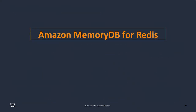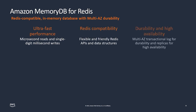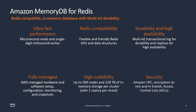Let's talk about how MemoryDB for Redis works. First, it's a Redis-compatible in-memory database with multi-AZ durability. It is intended to be used as a primary data store and provides low latency. It has the flexible and friendly Redis APIs that developers love for building highly concurrent applications. The durability comes from a multi-AZ transaction log, which also has replicas for high availability. We provide a fully managed service that gives you hardware, software setup and configuration, snapshots, and monitoring to keep your clusters highly available. It can scale both vertically and horizontally up to 500 nodes and over 120 terabytes of total data. And it comes with security built-in — encryption in transit as well as at rest, and access control lists.